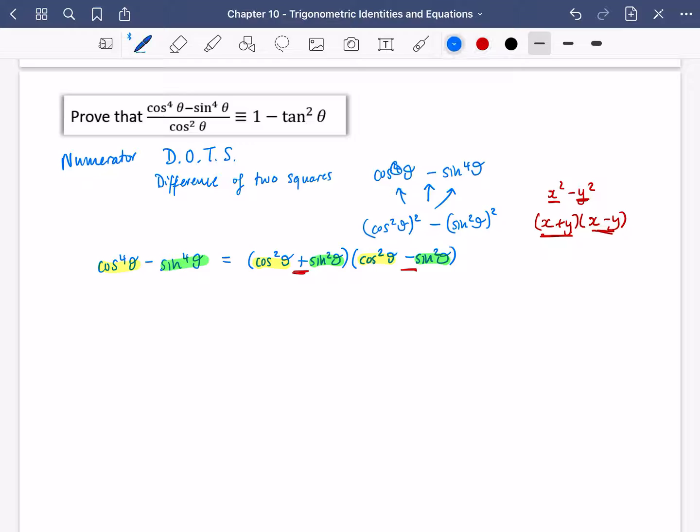So now that I've worked that out for that numerator, I can actually go ahead and do the proof. So I'm going to do cos to the power of 4 minus sin to the power of 4 theta, all divided by cos squared theta. Well, we get cos squared theta plus sin squared theta. This is just from the line above. Cos squared theta minus sin squared theta, all divided by cos squared theta.